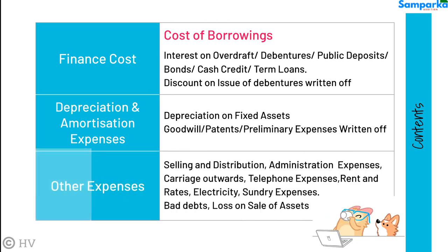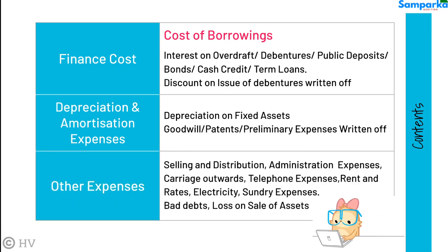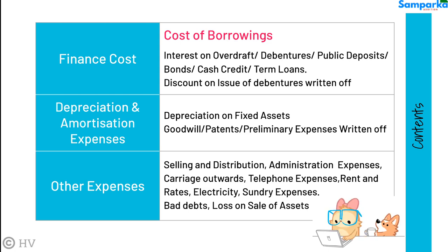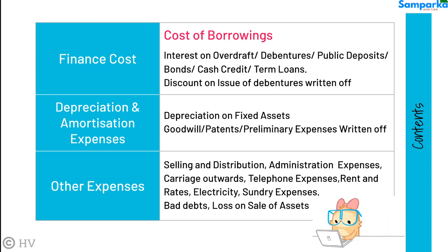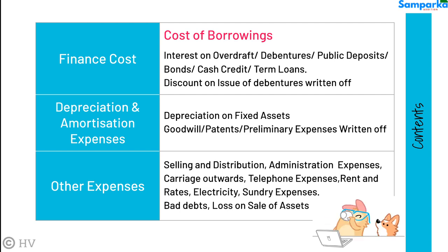Other expenses — expenses that do not find place in the above-mentioned heads are brought under other expenses. This head includes selling and distribution expenses, administration expenses, carriage outwards, telephone expenses, rent and rates, electricity, sundry expenses, bad debts, and loss on sale of assets.